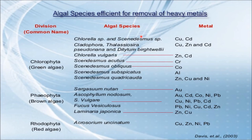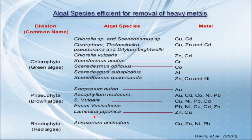These are some of the algae which can efficiently remove heavy metals. In the case of Chlorophyta, which is green algae, examples include Chlorella and Scenedesmus. Chlorella vulgaris can remove zinc and cadmium; Scenedesmus acutus can remove chromium; and Scenedesmus obliquus can remove cobalt. Sargassum natans can remove aluminium; Sargassum vulgare can remove copper, nickel, and cadmium; and Laminaria japonica can remove zinc and copper.